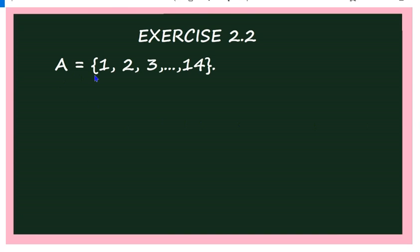Here A is given as {1, 2, 3, ..., 14}. First of all you have to write A cross A to find the relation. But as there are 14 elements in A, A cross A will have 196 elements, which would require a full page. So instead, let us think about the elements of A cross A and decide whether each element is in R or not. The method of finding R is very simple.